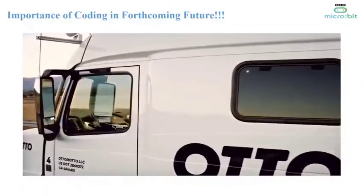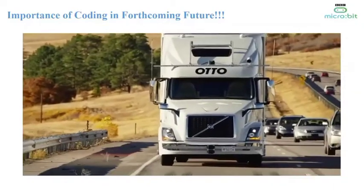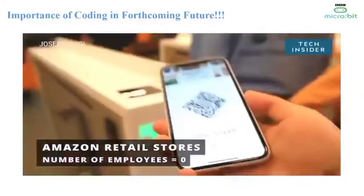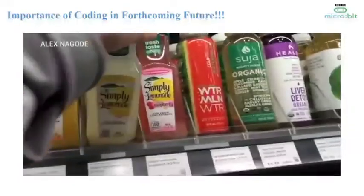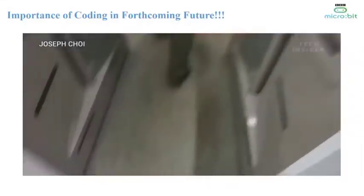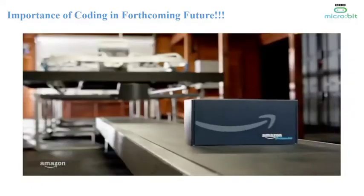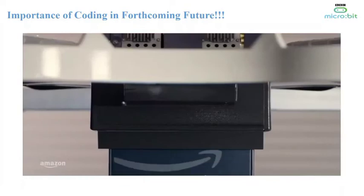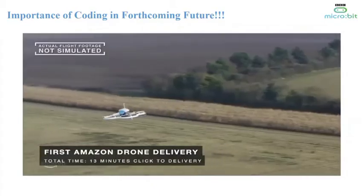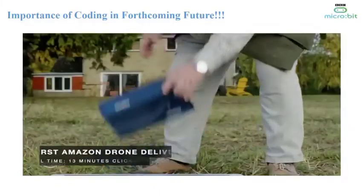We are going to have automated vehicles, which are going to be efficient and fast as well. Then retail stores like Amazon Go — for entry, exit, and billing, all the cases are going to be automated. The products ordered on Amazon are going to be delivered by drones, which is our fastest means and an efficient one, unbelievably faster.